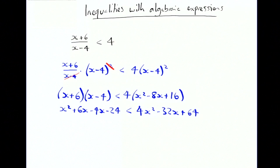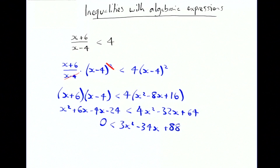Keeping all the x squared terms positive is so much nicer. Moving everything to one side we end up with 3x squared minus 34x plus 88 is all greater than 0. The way we deal with these quadratic inequalities: we factorise them, we find our critical values, we draw a quick sketch, and we decide the range.